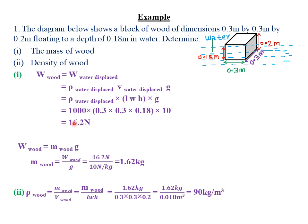Now that we have the weight, we can easily find the mass because weight equals mg. So weight of the block of wood equals mass of the block of wood times gravity. Therefore, making mass the subject of the formula, mass of the block of wood equals weight divided by gravity: 16.2 Newtons divided by 10 Newton per kilogram, which gives us 1.62 kilograms. That is the mass of the wood.